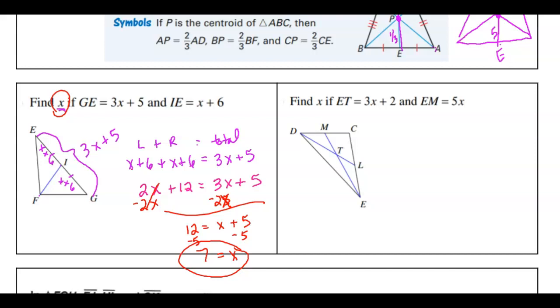On this one, we'll just label, and we'll figure out what we need. So E to T, so from here to here, is 3X plus 2. EM, so that's the whole thing, is 5X. So what we know is that we have that top part, which is two-thirds of the whole thing. So we know that E to T is actually two-thirds of our total EM.